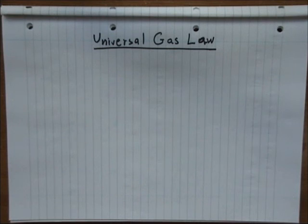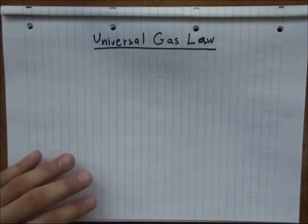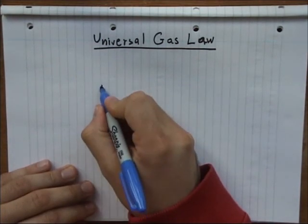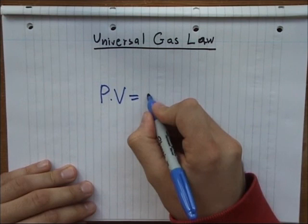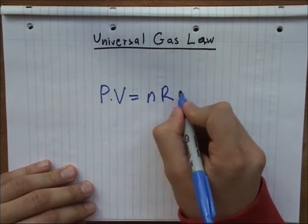First of all, let's start with the universal gas law, which is the following: we have P times V equal to nRT.